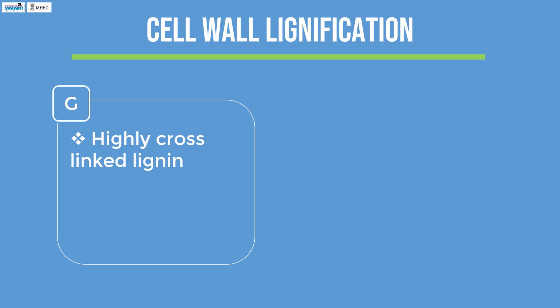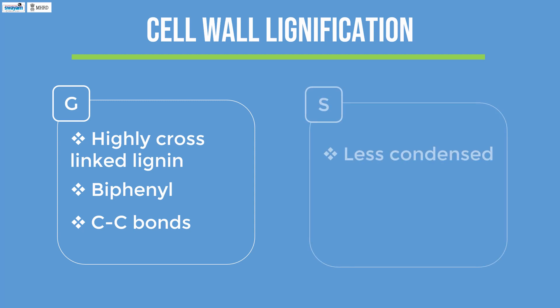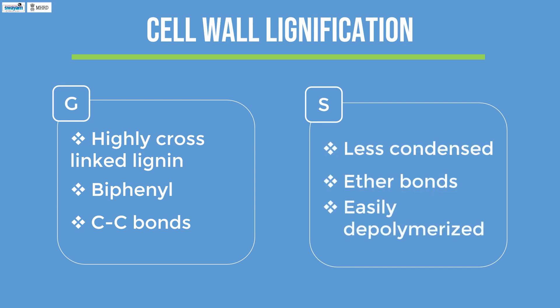The ratio of S and G subunits in lignin also predicts the degree and nature of polymeric cross-linking. G-rich tissues have a highly cross-linked lignin containing a greater proportion of biphenyl and other carbon-carbon bonds, whereas S-rich lignin is less condensed, linked through more labile ether bonds at the 4-hydroxyl position. Hence, S-rich lignin can be more easily depolymerized compared to lignin rich in G units.